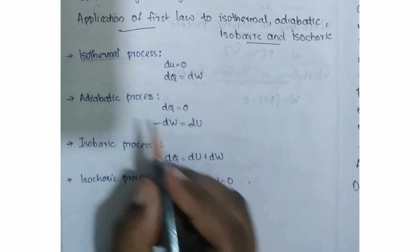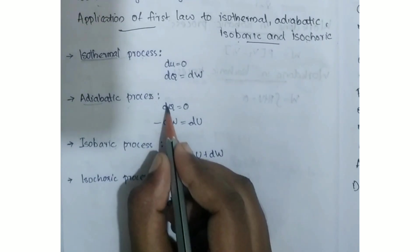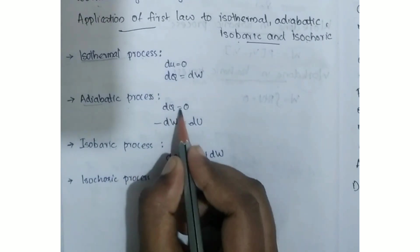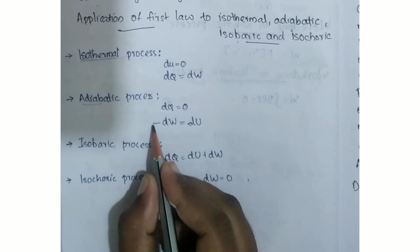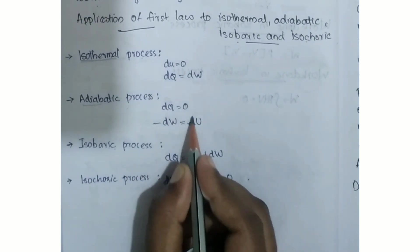In the adiabatic process, entropy is constant and dQ is equal to zero. So, minus dW is equal to dU.